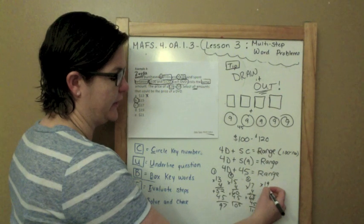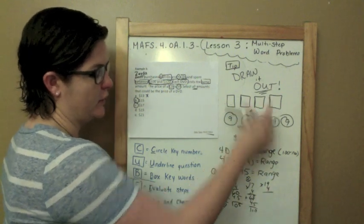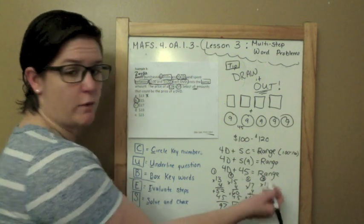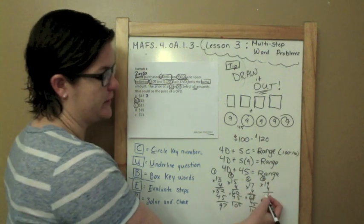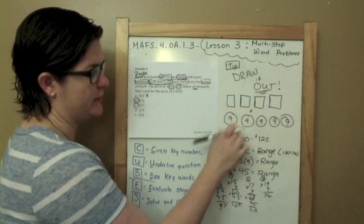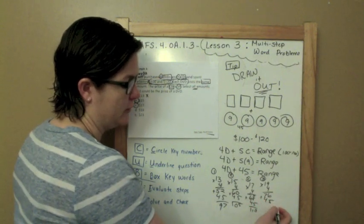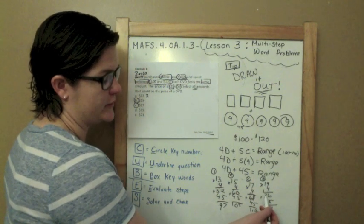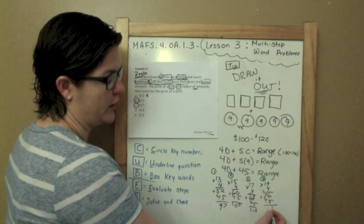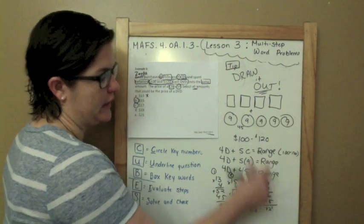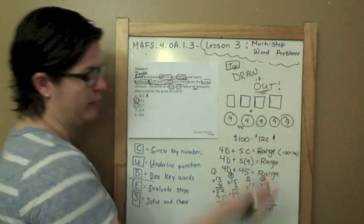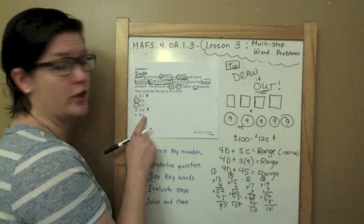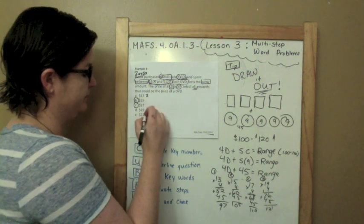Let's try 19. I have a feeling 19 is going to be high. 19 times 4 is 36. 4 times 1 is 4 plus 3 is 7, that's 76. 76 plus 45. 6 plus 5 is 11, 1 plus 7 is 8, 8 plus 4 is 12, that's 120. And now I am outside of that range, so that's not going to work. And because 19 dollars per DVD is outside, so would 21. So B and C are your answers.